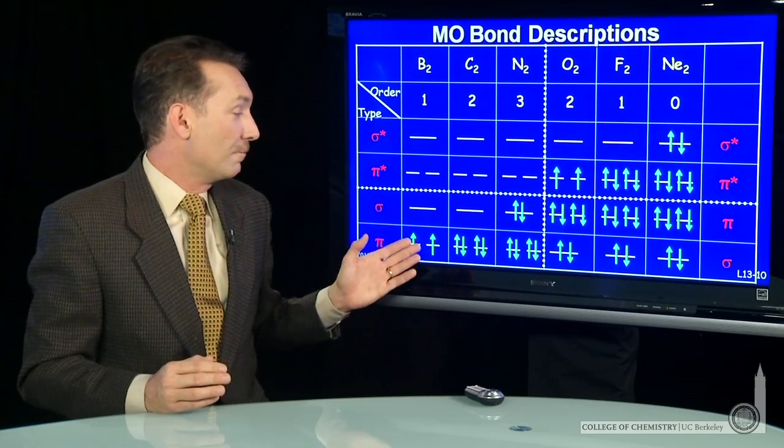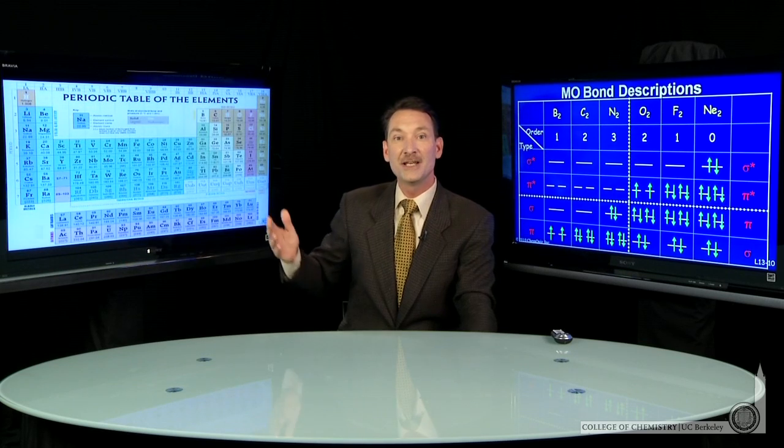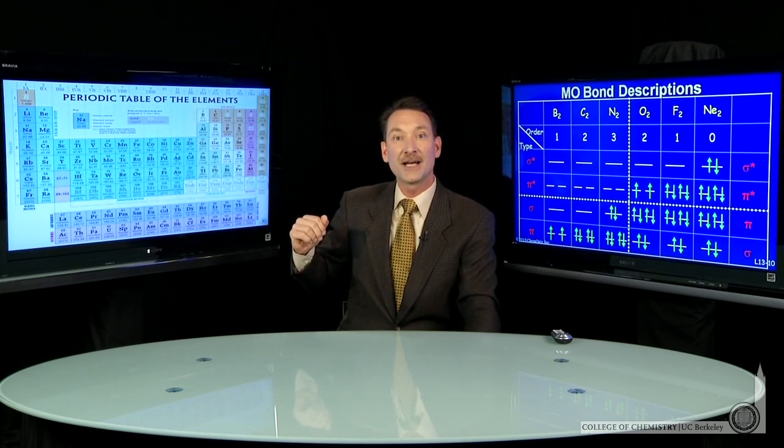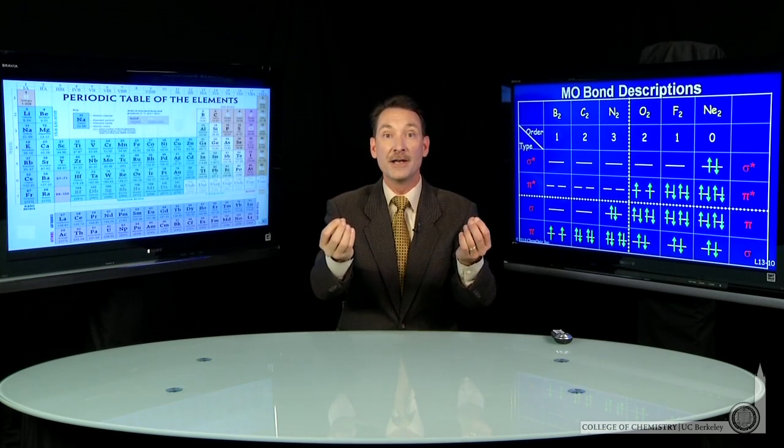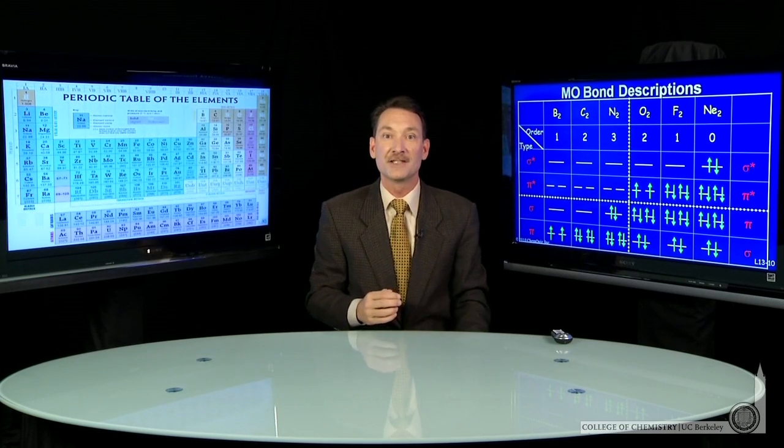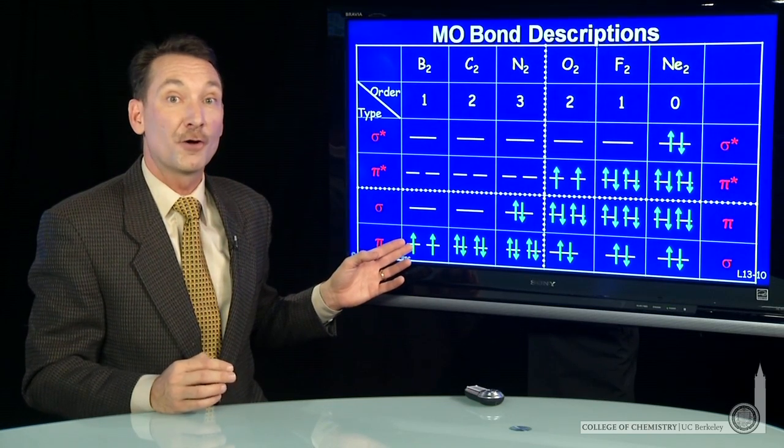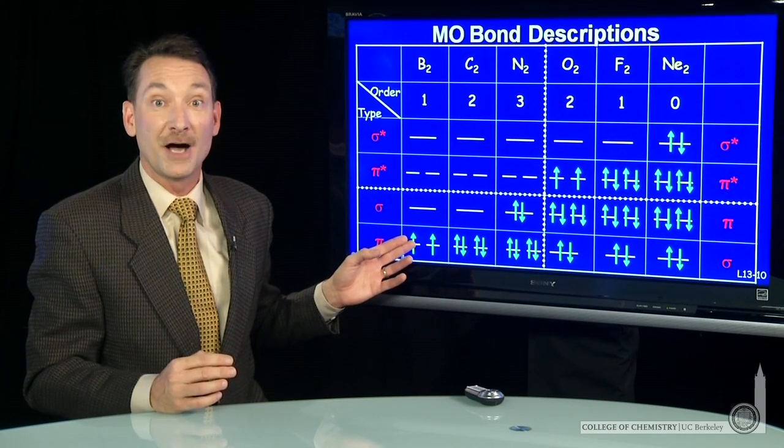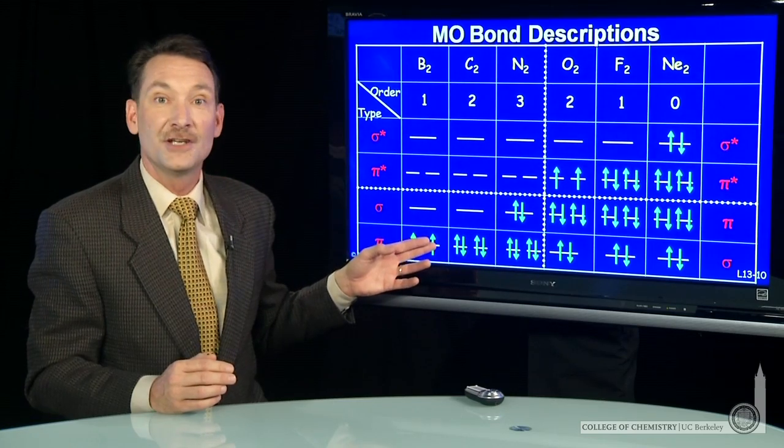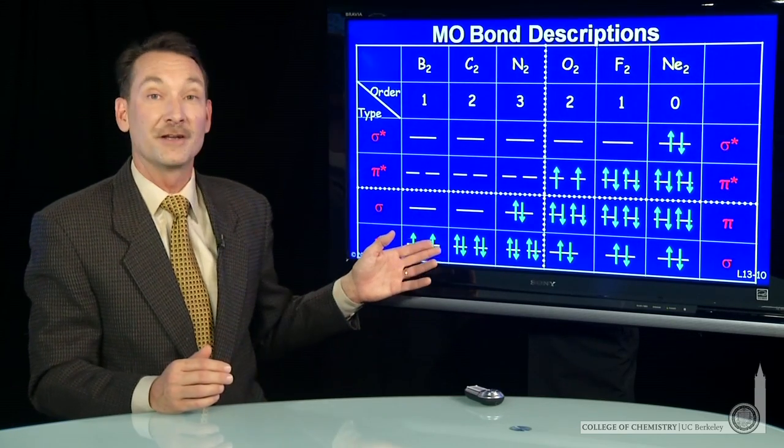So boron has one 2p electron. We can take that 2p electron, one from each boron, and put it into the molecular orbitals, so 2 electrons in the molecular orbitals. Here's boron. The lowest energy molecular orbitals are the pi bonding orbitals. One in each, we predict that boron would be paramagnetic with unpaired electrons.